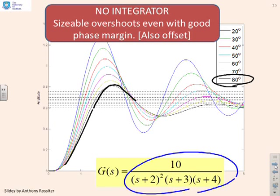That's with 80 degrees. If I go down to something like 60 degrees, this magenta one, the overshoot is even more—a very big overshoot indeed.